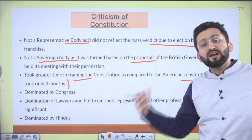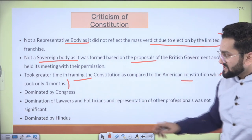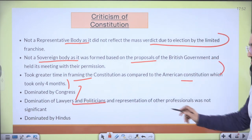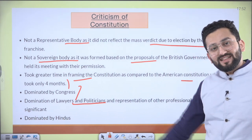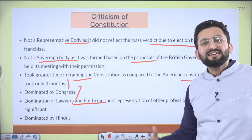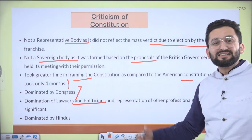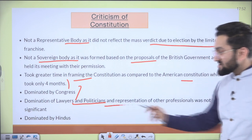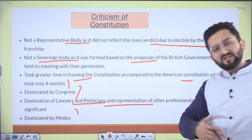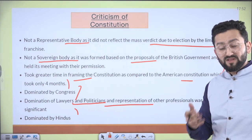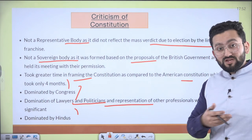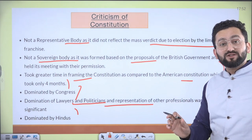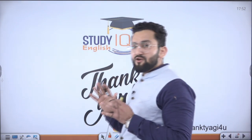Our constitution is also far more elaborate than the American constitution. Further criticisms: it was dominated by Congress — though it was based on consensus building; dominated by lawyers and politicians — as Jennings said, it is a 'lawyer's paradise' and difficult for a common Indian to understand; and it was dominated by Hindus. But representation was ensured across gender — women were there — across caste — SCs and STs were represented — across religion, and Anglo-Indians were also included.